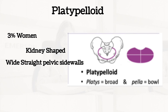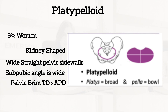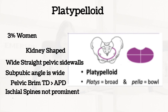The platypelloid has straight pelvic side walls that are very wide. The pubic angle is also wide. The pelvic brim has a transverse diameter that is greater than the anterior-posterior diameter. The ischial spines are not prominent, and the bone structure is medium.